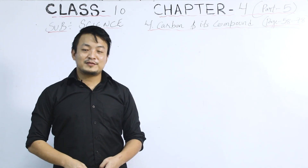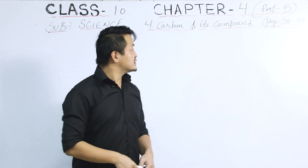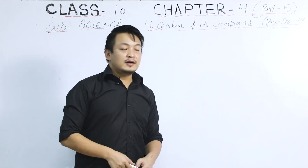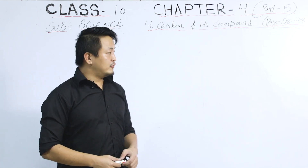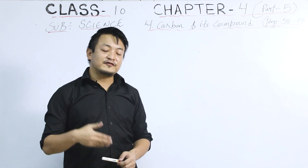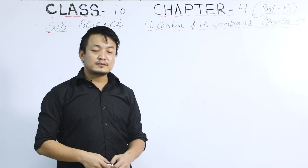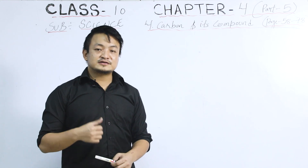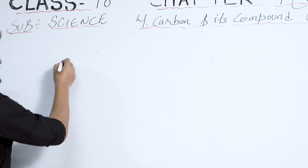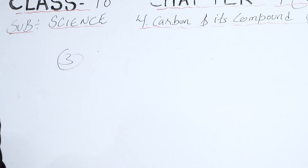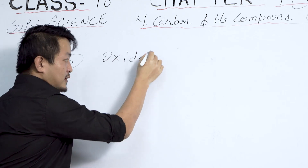Hello, dear class 10 students, welcome back. Today we will continue with Part 5 of this chapter, Carbon and Its Compounds — you can refer to pages 58 to 78. In the last class we discussed the chemical properties of carbon, finishing addition reaction and combustion reaction. Today we'll discuss the third chemical property: oxidation reaction.